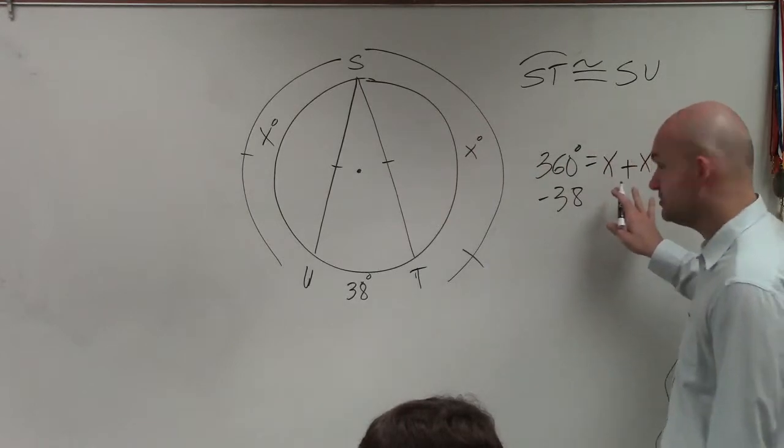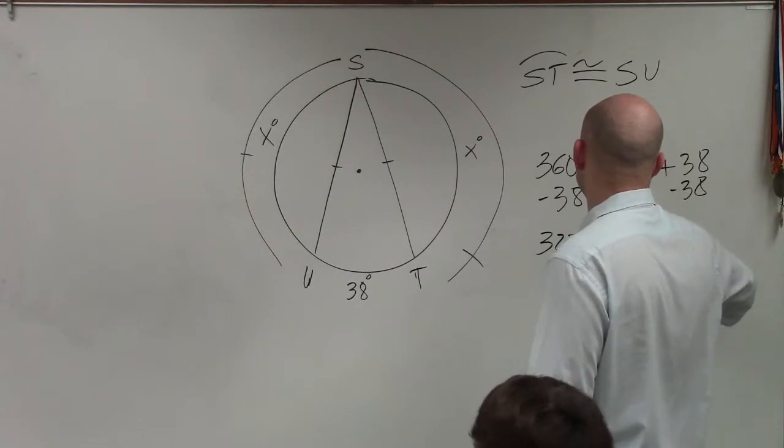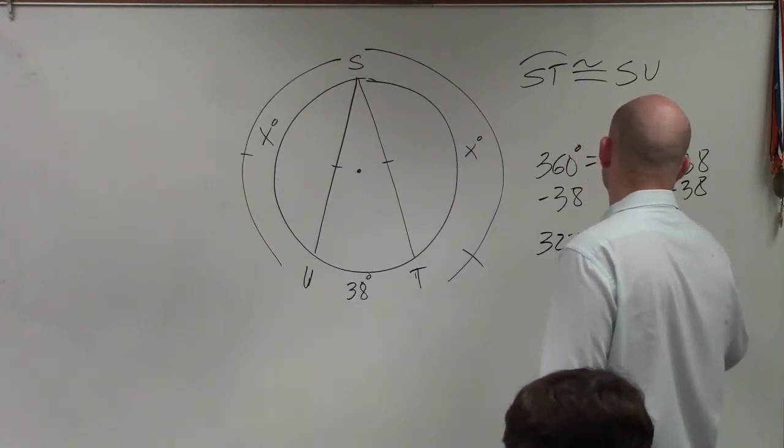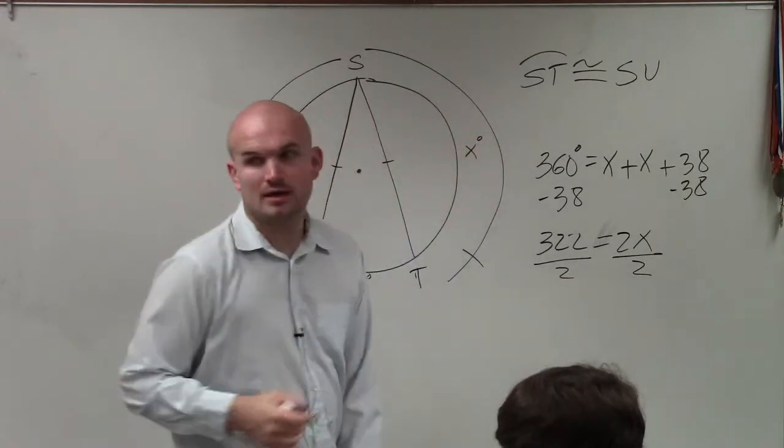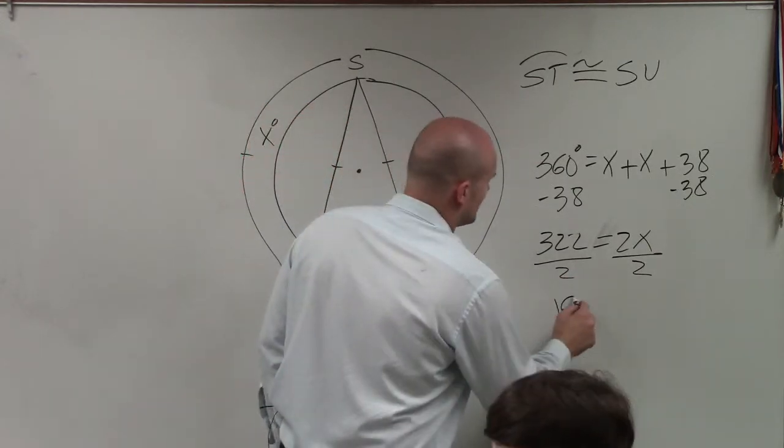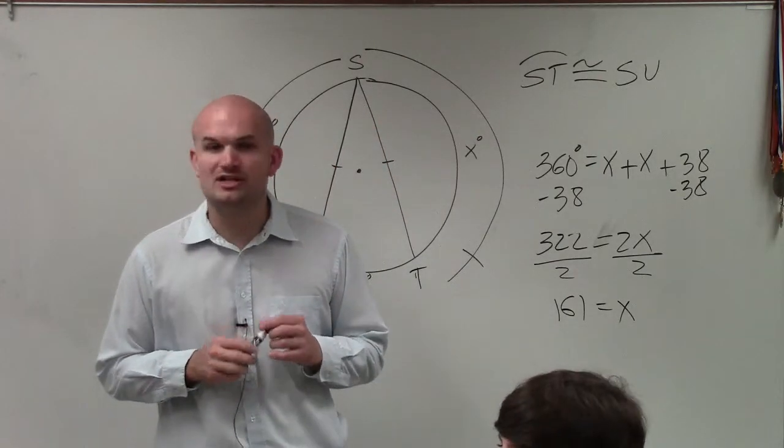So you can add these up together, get 2x. So I have 322 equals 2x, divide by 2, and you get 161 equals x. Any questions?